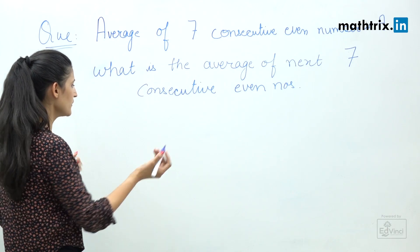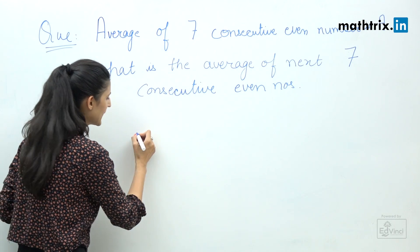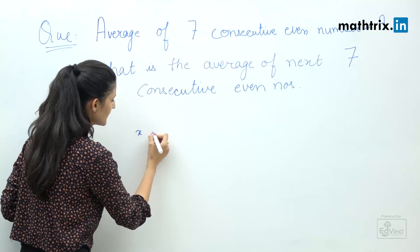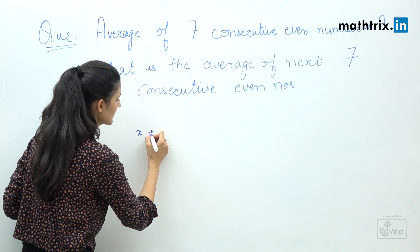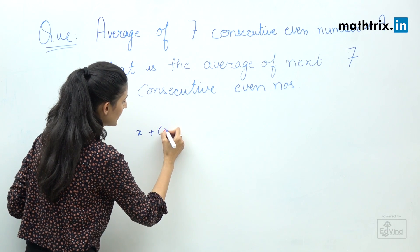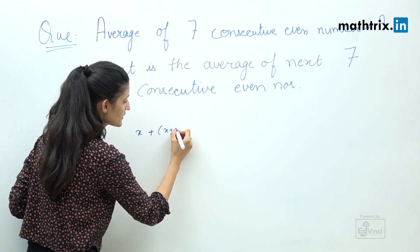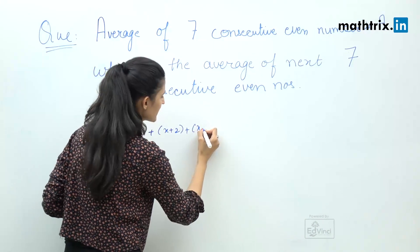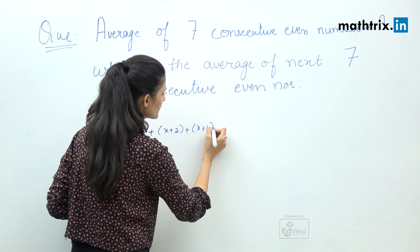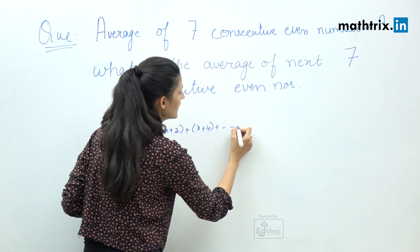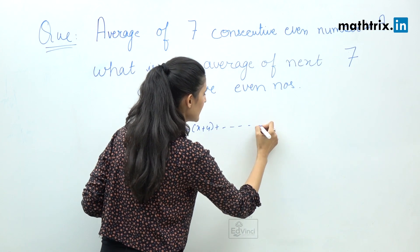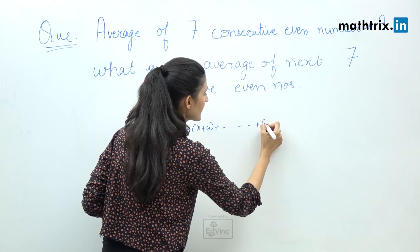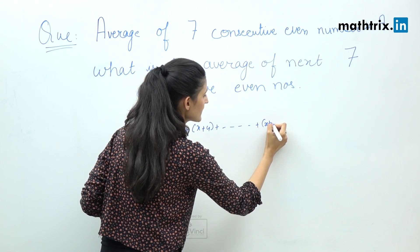To solve this question, we start by writing out the numbers. The first number is x, the second even number is x plus 2, the third is x plus 4, and so on. The seventh number would be x plus 12.